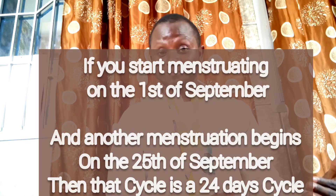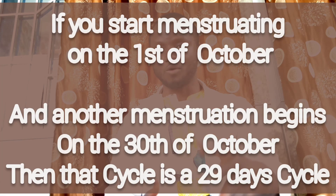Let's take another example. If you saw your cycle on the 1st of September and another cycle comes on the 25th of September, then that cycle is 24 days — because the 1st is the beginning, the 24th is when the cycle stops, and the 25th is the beginning of another cycle. Similarly, if you saw your cycle on the 1st of October and another comes on the 30th of October, you are a 29-day cycle. If it came on the 22nd of October, you are a 21-day cycle.